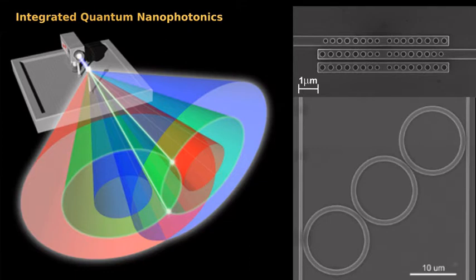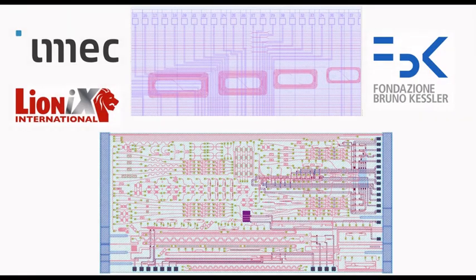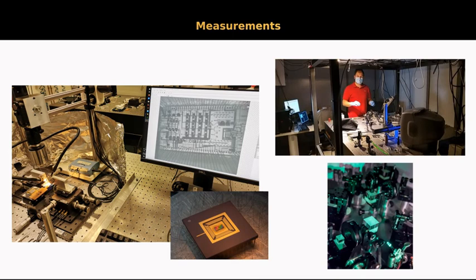Integrated quantum nanophotonic science and technology result from the combination of quantum optics on one side with the most recent and advanced nanophotonic techniques on the other. A good part of our work consists in designing nanophotonic circuits which can generate, manipulate and eventually detect single photons on a chip. We rely on external photonic foundries or close collaborators like Fondazione Bruno Kessler for the fabrication of the photonic chips that once we receive we can test and use to perform the suited measurements in our laboratories.